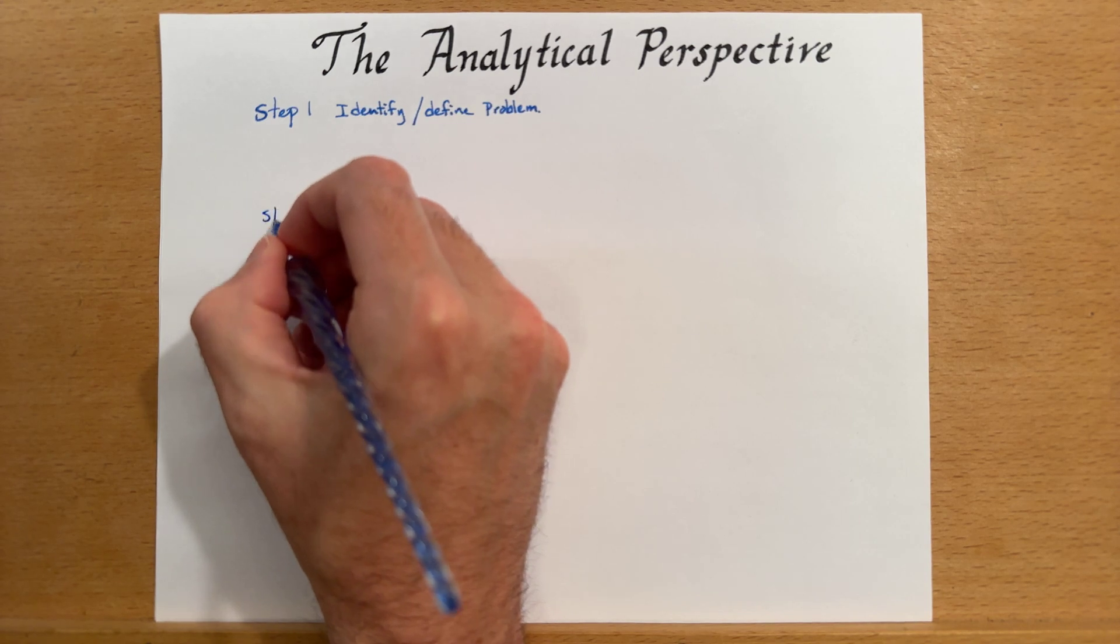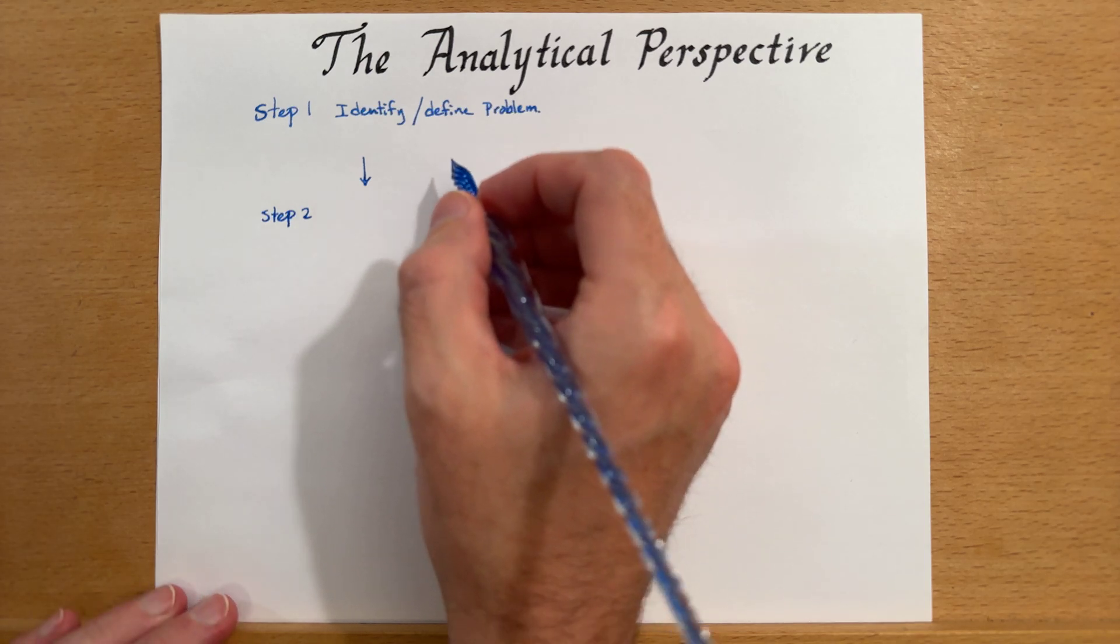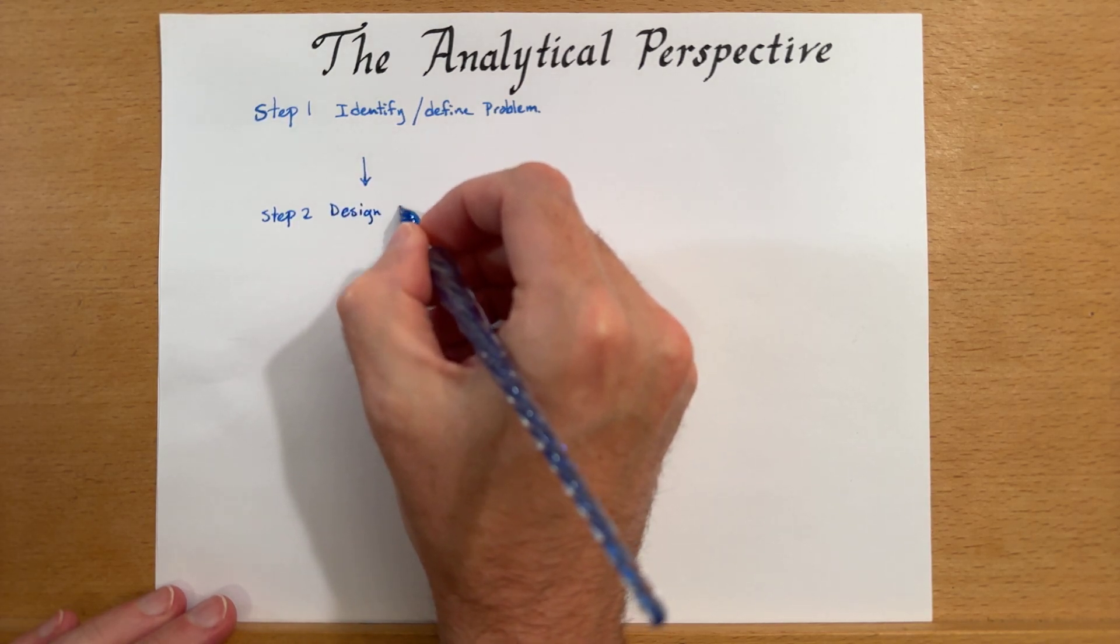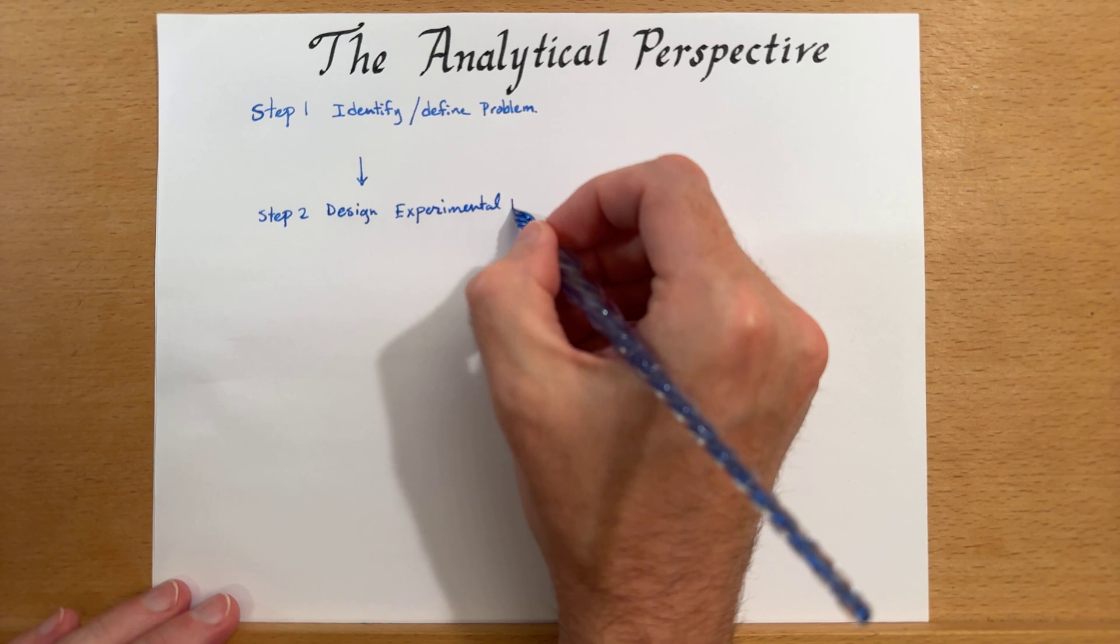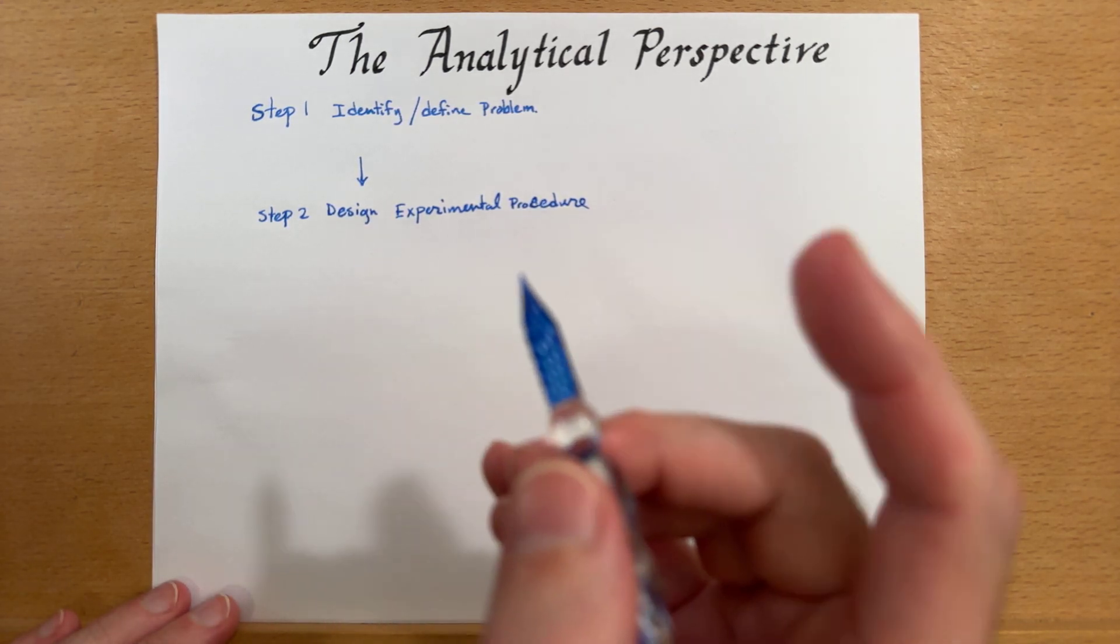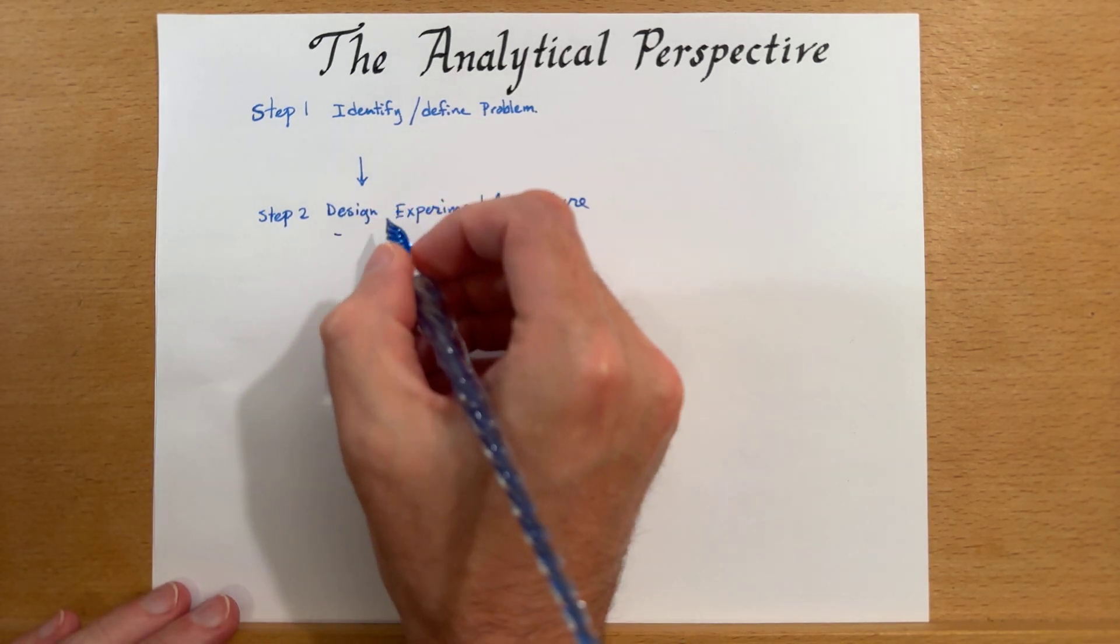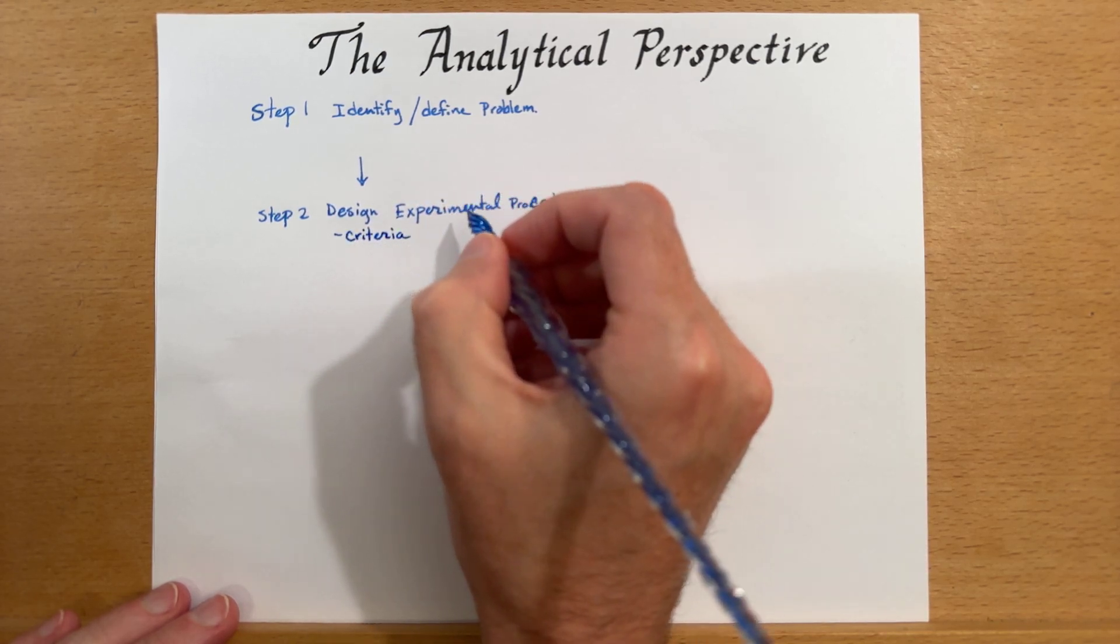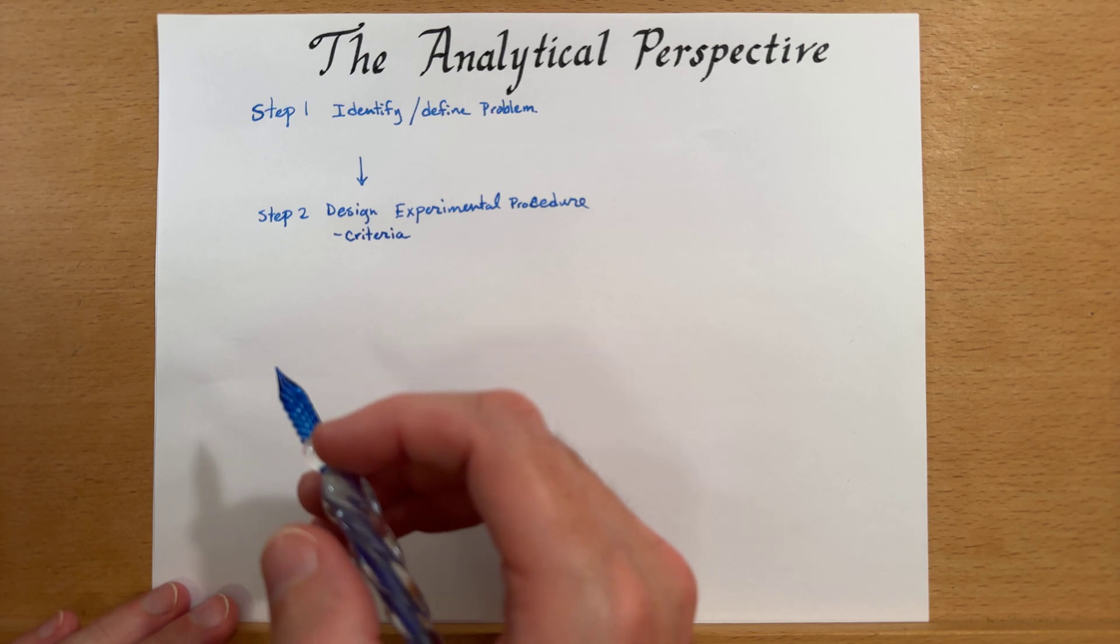From there, we'll have step two, which is to design an experimental procedure to look at solving this problem. When we're designing an analytical procedure, we need to look at a few things. We need to look at the criteria, what are we trying to solve? What would constitute success?